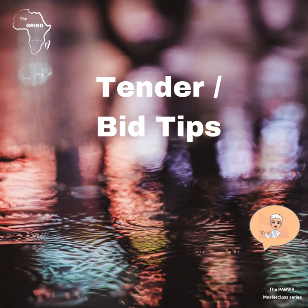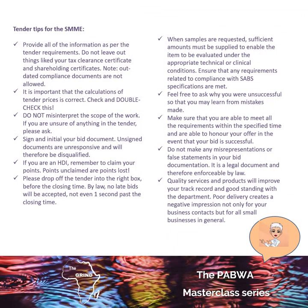Tender bid tips. Provide all information as per the tender requirements — I've said that over and over again. If they ask you to do something in a specific way and you do not do it that way, it's most likely you will be disqualified. Make sure all your calculations for your pricing are correct — check, check, and double check. Try not to misinterpret the scope of work. If you are unsure about anything, please ask. That's why the clarification period is so important. If there are elements in the scope that are not clear, you have the opportunity to ask those questions and clarify anything in that document.